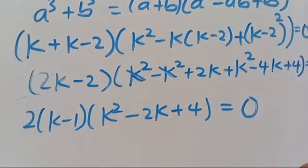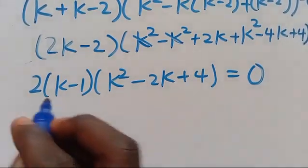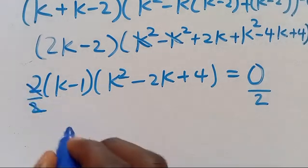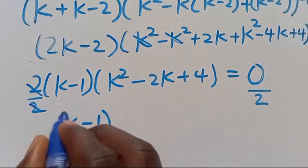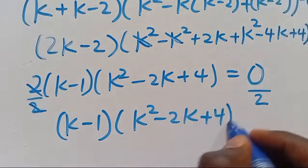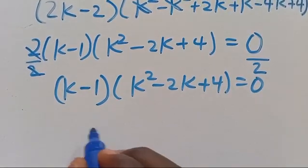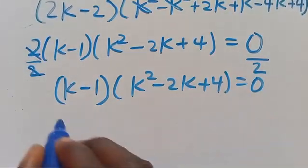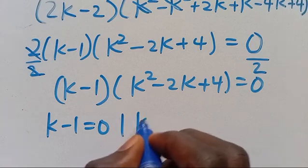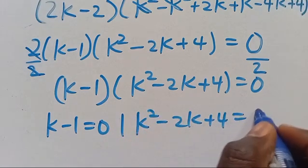Factoring 2 out here gives us 2 times K minus 1, and we're left with K squared minus K squared, plus 2K minus 4K giving us minus 2K, then plus 4, all equals 0. Dividing through, we cancel and have K minus 1 multiplied by K squared minus 2K plus 4 equals 0.